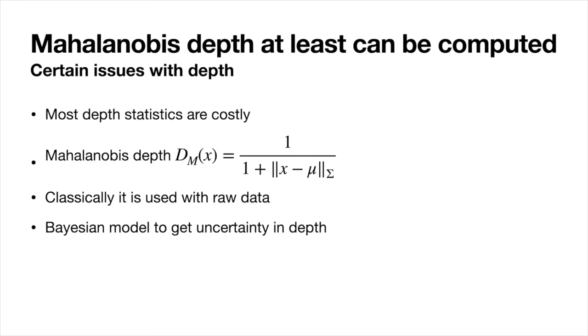In this talk, we focus on Mahalanobis depth, because at least it can be computed, because generally most depth statistics are very difficult to compute. The simplest ones, except Mahalanobis, require at least solving eigenproblems of high dimension, or even some of them are NP-complete. Classically, data depths are used with data. However, we wanted to use the Bayesian model in order to use data depth on the distribution, to get a distribution of data depth both for the overall healthy system and for the signals investigated for being faulty. And for that, we used Stan.